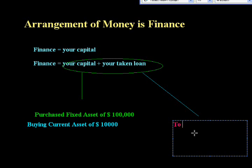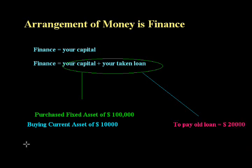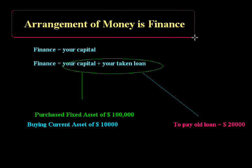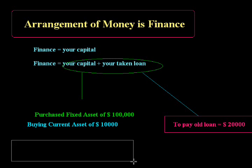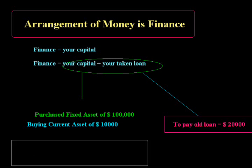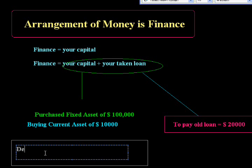To pay an old loan, suppose you need dollar twenty thousand. So we can say finance is the arrangement of money for purchasing fixed assets, buying current assets, or paying a loan. It may also be possible that the need of finance is for depositing money in a bank.